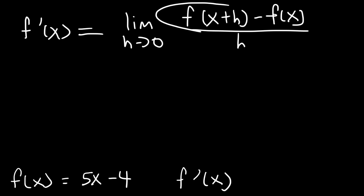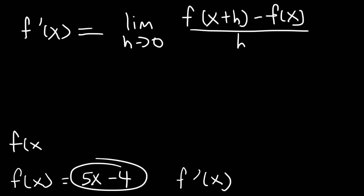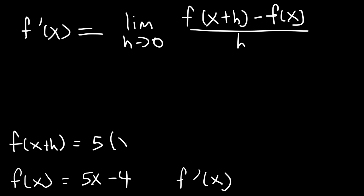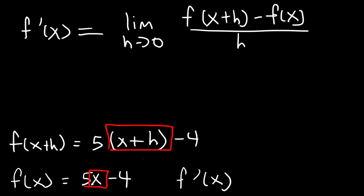What is f of x plus h? How can we find that? Well if f of x is 5x minus 4 then f of x plus h is going to be 5 times x plus h minus 4. All you need to do is wherever you see an x, replace it with x plus h. So now let's plug everything into this formula.